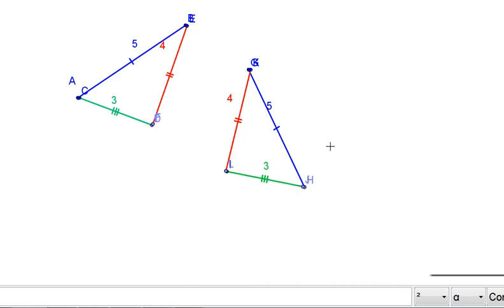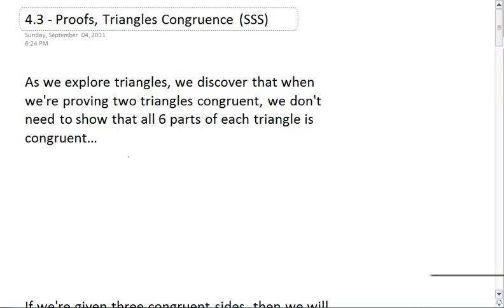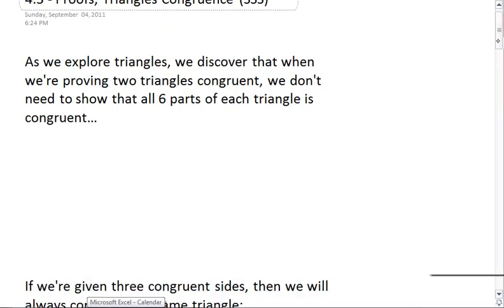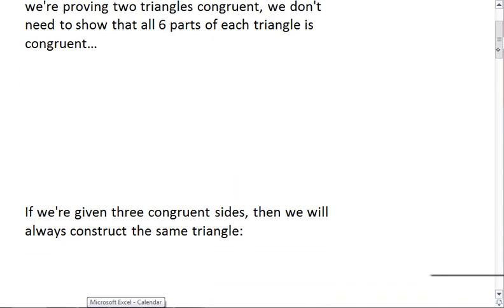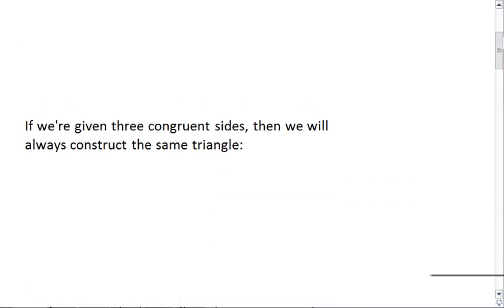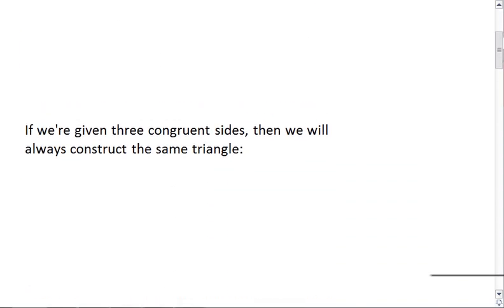And I can see in here that I have two congruent triangles. You can imagine if I were to rotate these, no matter how I put the three side lengths together, the triangles will always be congruent. And this leads us to this conclusion that if we're given three congruent sides, then we will always construct the same triangle.